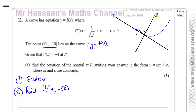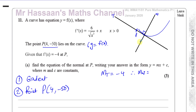The gradient of the normal is the negative reciprocal of the gradient of the tangent. The gradient of the tangent at P is minus 4. Therefore the gradient of the normal is its negative reciprocal. When lines are perpendicular, their gradients are negative reciprocals of each other — the product of their gradients is always minus 1. So you change the sign to positive and take the reciprocal of 4, which is a quarter. The gradient of the normal equals a quarter.